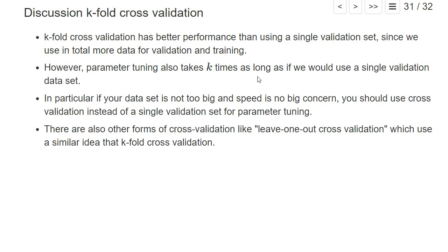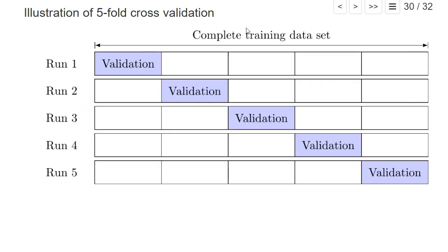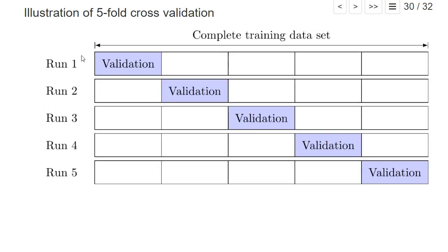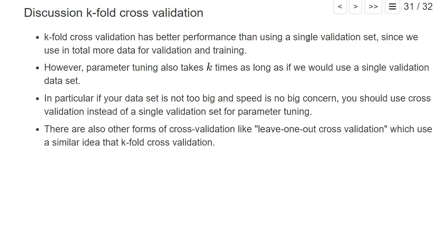The only drawback is that it takes longer to run. Typically five-fold cross validation takes five times as long for hyperparameter tuning, which can sometimes take a very long time — particularly with large data sets and complex models — because for each run we estimate as many models as we have hyperparameter combinations. So hyperparameter tuning can take a lot of time.